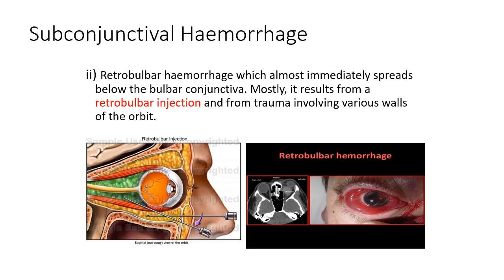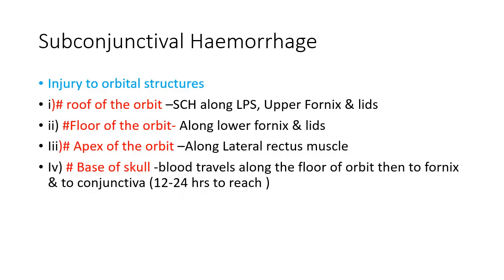With a retrobulbar injection, there are chances of injury to blood vessels within the muscle cone, leading to retrobulbar hemorrhage that can track anteriorly, causing a subconjunctival hemorrhage. In fracture of the roof of the orbit, the subconjunctival hemorrhage is along the superior fornix and upper lids; in fracture of the floor of the orbit, it is seen along the lower fornix and lids.